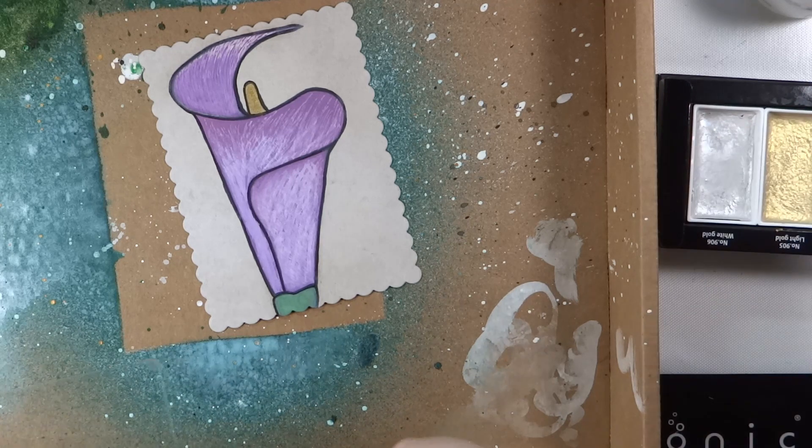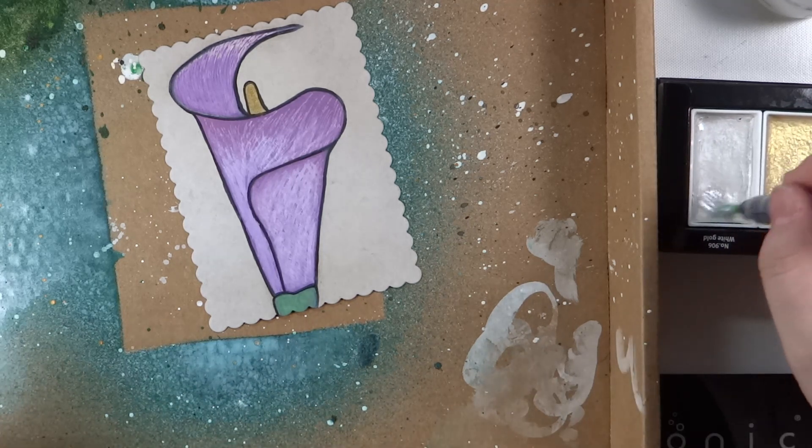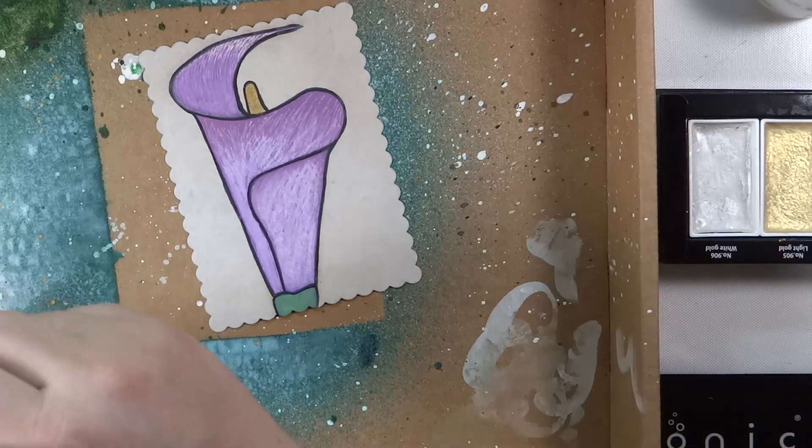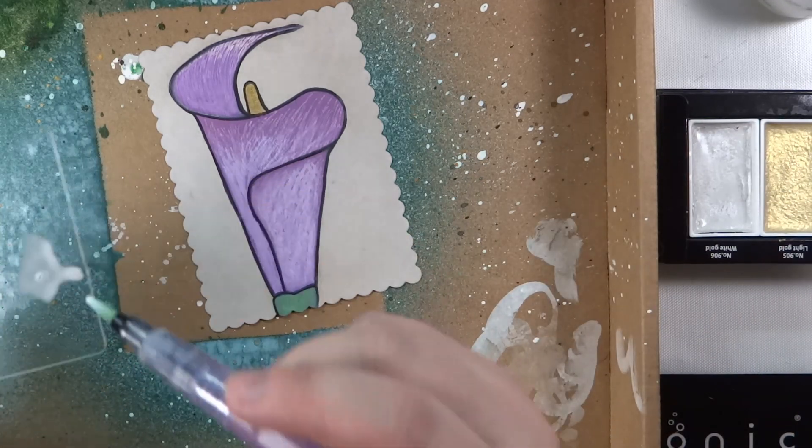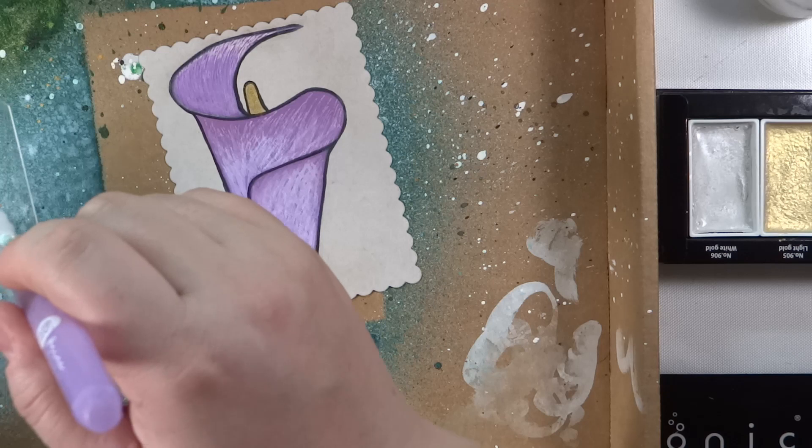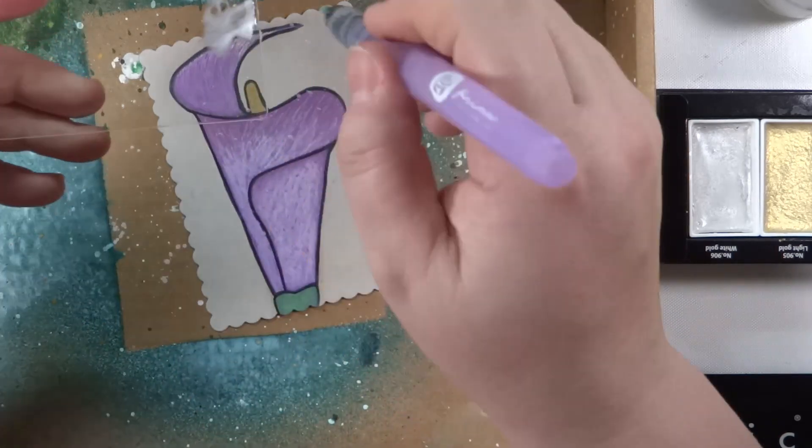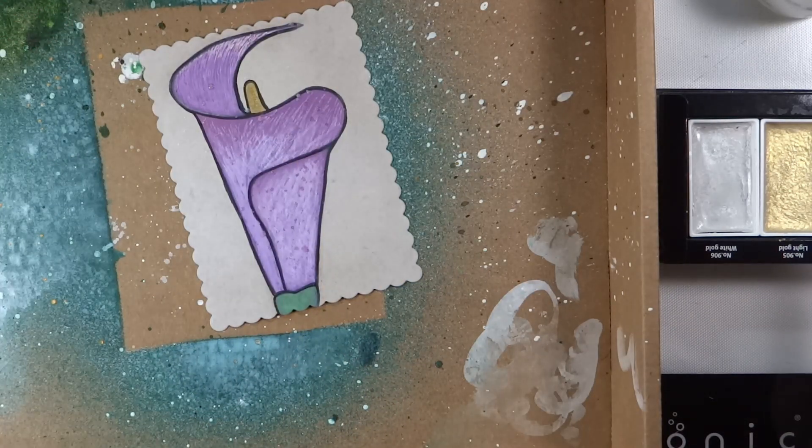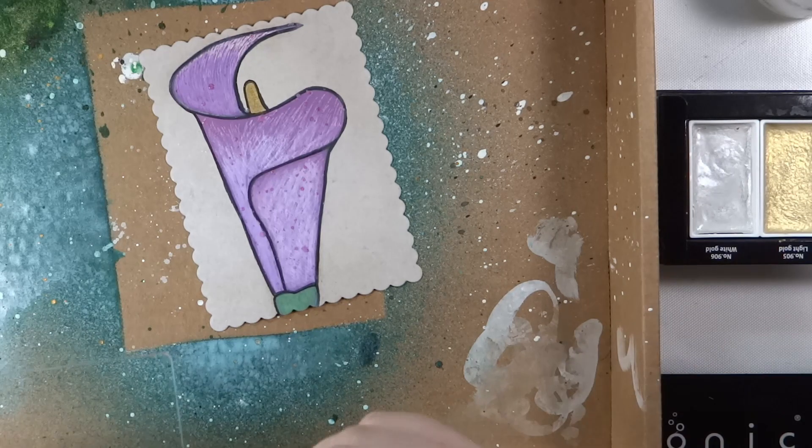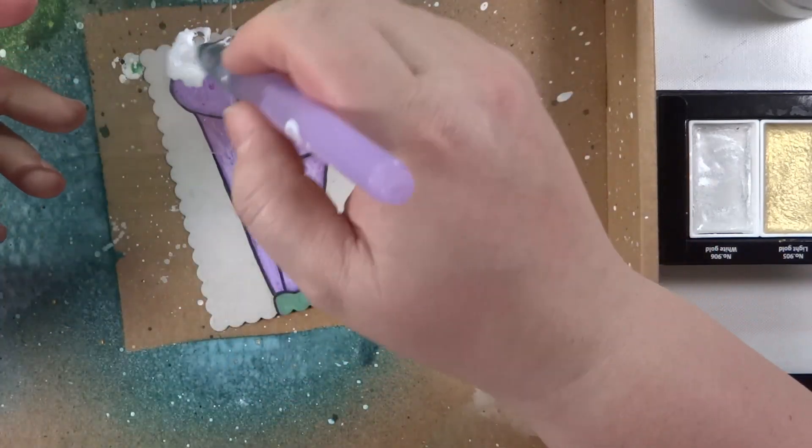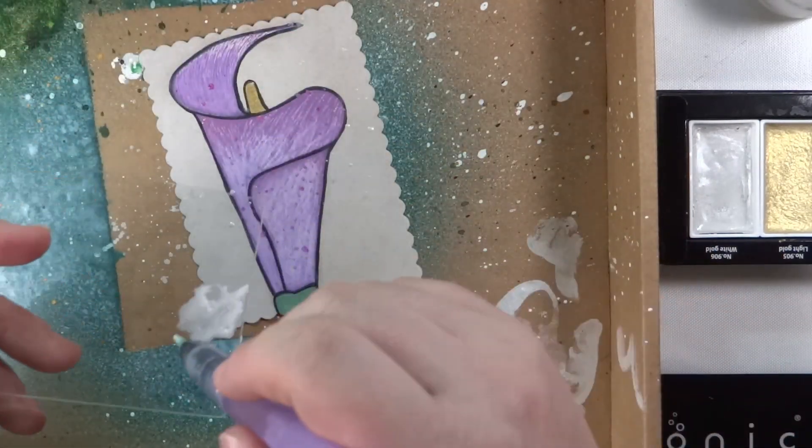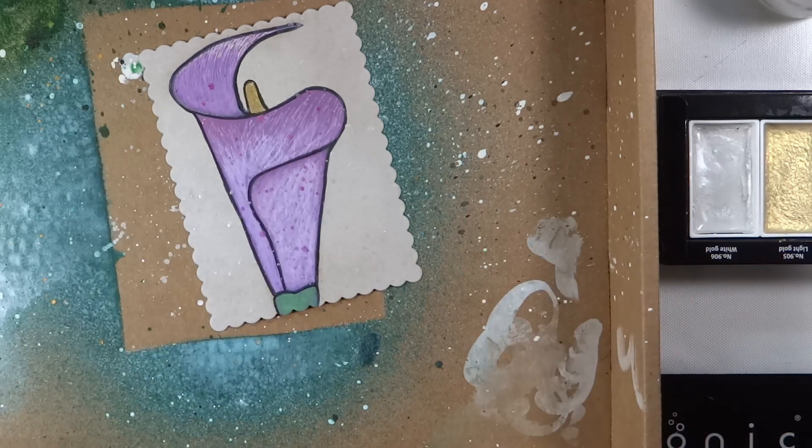And I'm using my water brush again. This one is a Prima one. And I'm adding that white gold watercolor to an acrylic block and just piling some on that. And then I can flick it with my water brush onto the piece. And because I did use the Distress Oxide reinkers it will react with the watercolors and the water that's in the splatter.